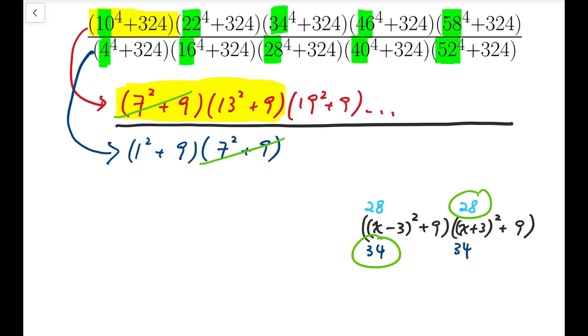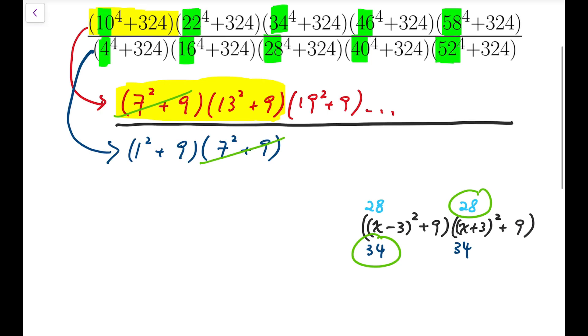Then for numerator, we will get the product of terms of the form some numbers squared plus 9, from 7 up to 13, 19, all the way up to 61 squared plus 9. While for denominator, similarly, I will get the product of 1 squared plus 9, 7 squared plus 9, all the way up to 55 squared plus 9. So that means I can cancel out everything in the middle.